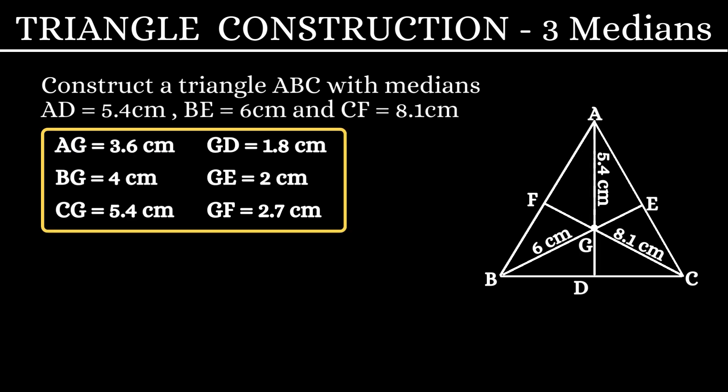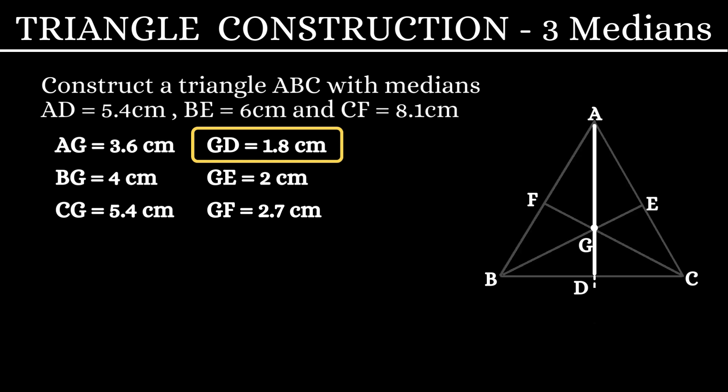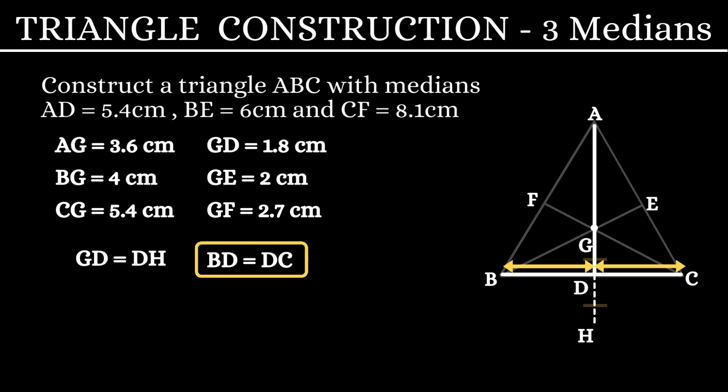Now, listen carefully. The length GD is 1.8 cm. Let us produce this median AD to a point H where DH is also 1.8 cm. Here, let us keep in mind that GD is equal to DH. Also, BD is equal to DC. That is because AD is the median and D is the midpoint of BC.